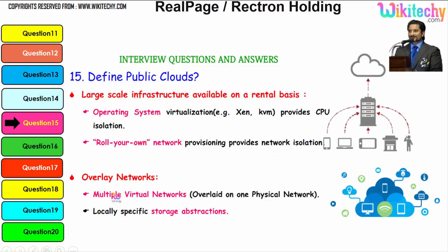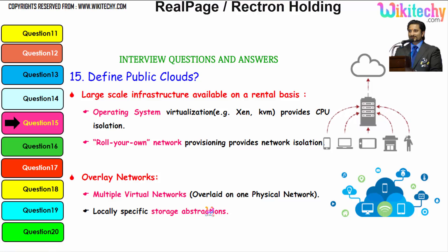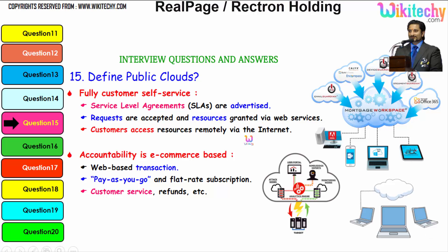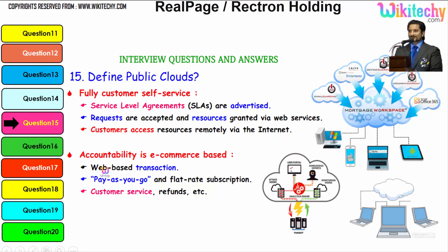If you talk about overlay networks, you are able to get multiple virtual networks overlaid on one physical network, and locally specific storage abstractions. Still talking about the features of public cloud — it is fully customer self-service. Serviceable agreements are advertised, requests are accepted and resources are granted via web services. Customers access resources remotely via the internet. Accountability is e-commerce based — web-based transactions or pay-as-you-go and flat rate subscription.